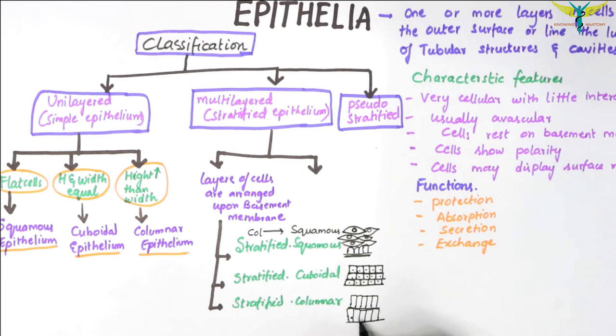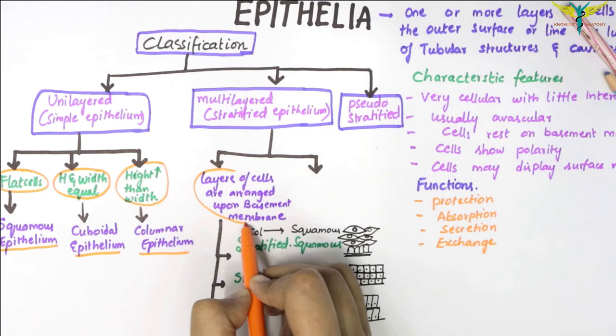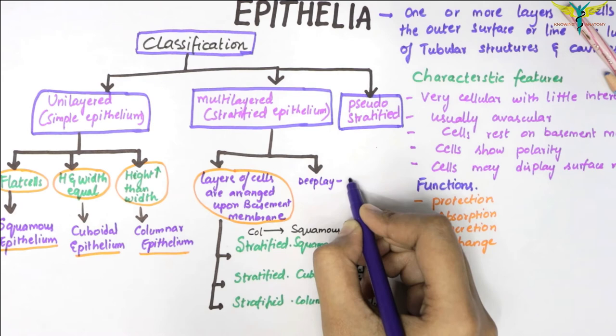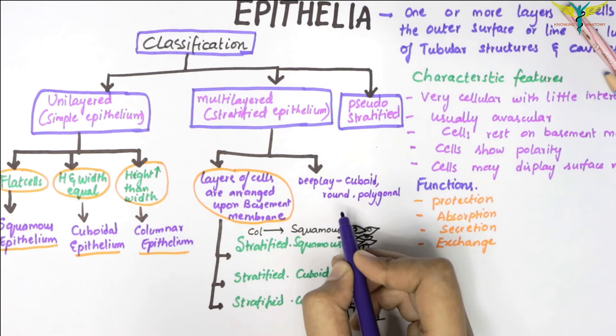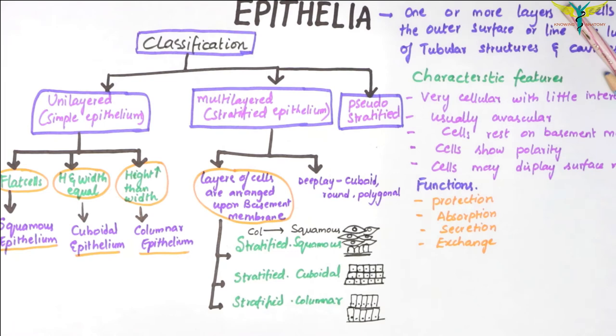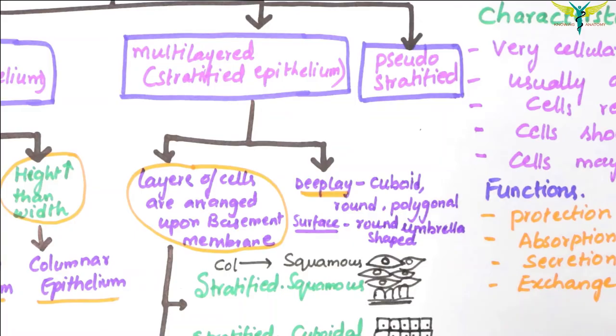The second type of multilayered epithelium is transitional epithelium, in which the deep layers are cuboidal, rounded, or polygonal. The surface layer of cells is round and umbrella-shaped, and these surface cells are not flattened. This characteristic shape identifies it as the transitional epithelium.